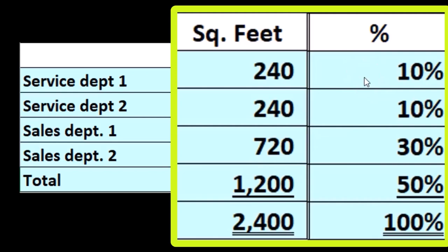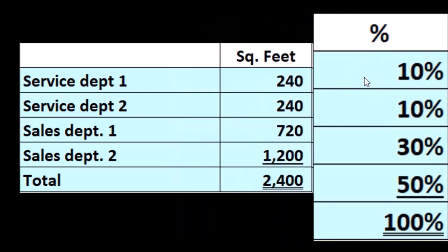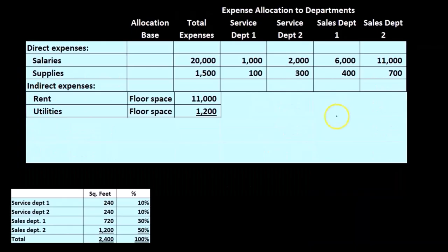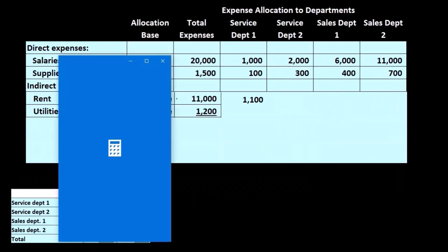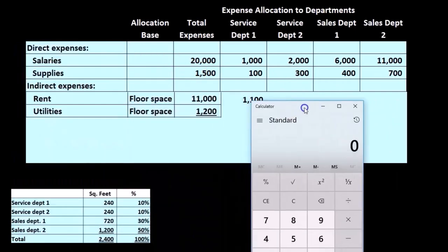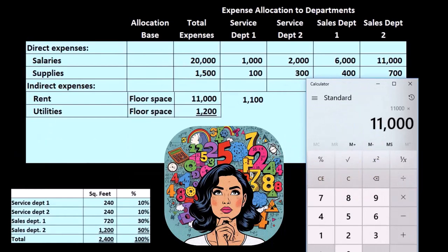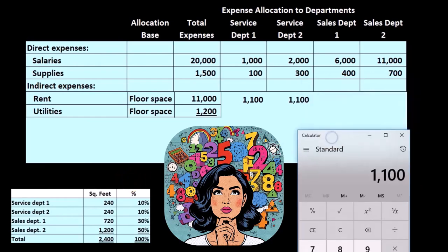We have percentages that we can use to allocate out utilities and the rent. Going back up to our worksheet, we take the 11,000 and apply it in accordance with our percentages. So 11,000 times 10% gives us 1,100, then 1,100, then 3,300 which is 11,000 times 0.3, and then 5,500.